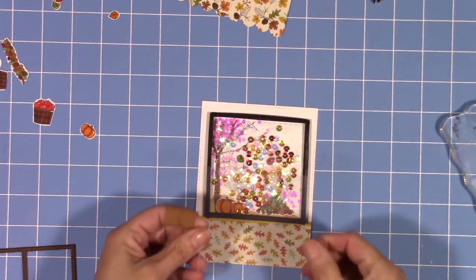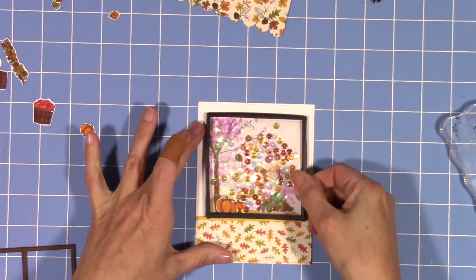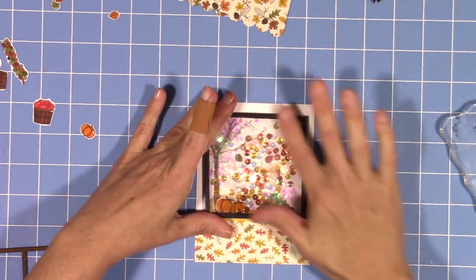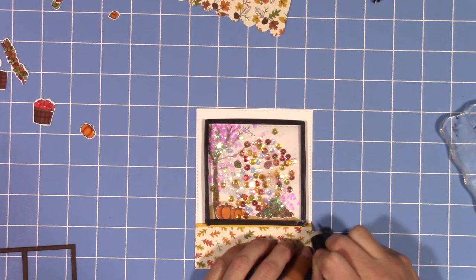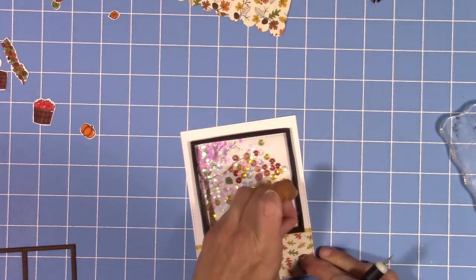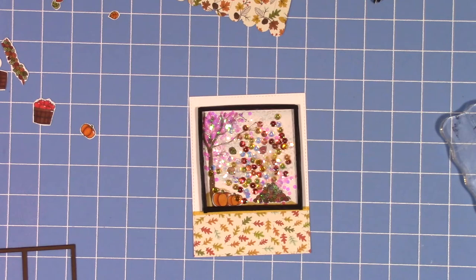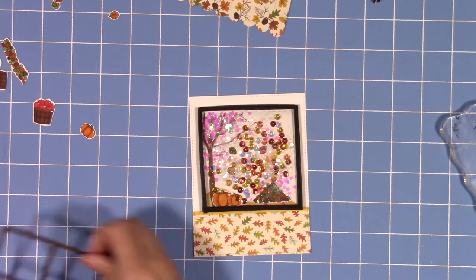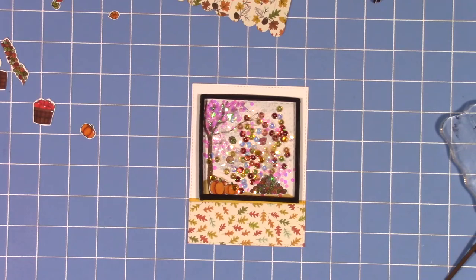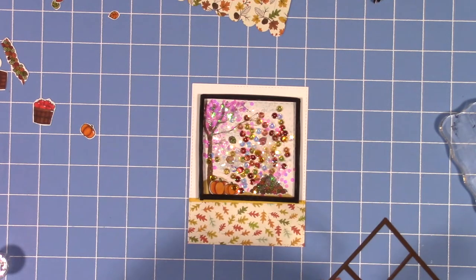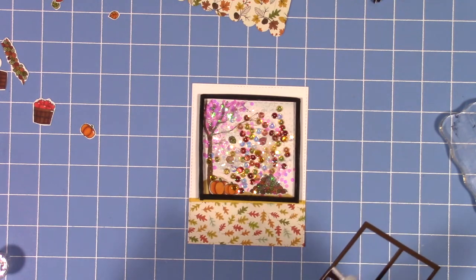This time I actually remembered to take off the little protective pieces covering the acetate. I always forget to do that and it's all cloudy looking, but this time I remembered. I'm going to pull off those protective films and attach my window frame to the outside. There's really no need to put glue in the middle because I always just get glue everywhere, so I'm just going to go along the outside.